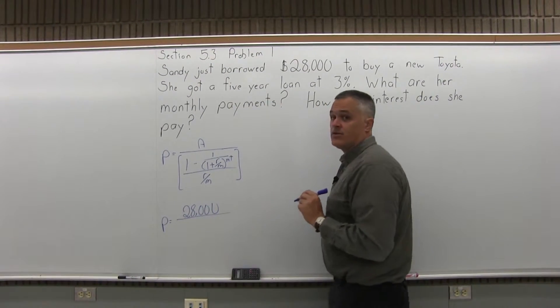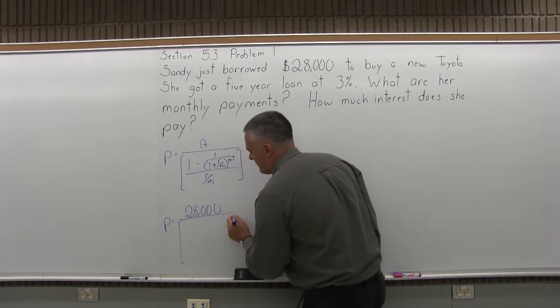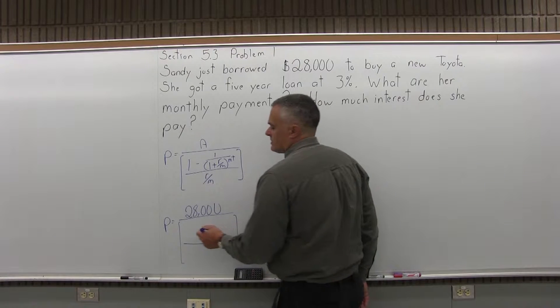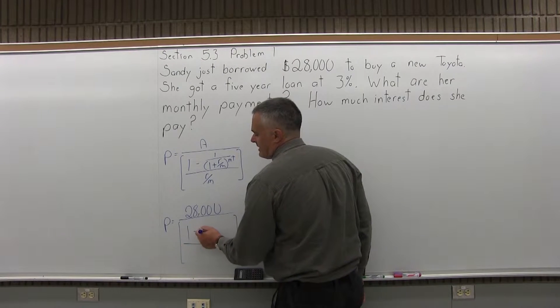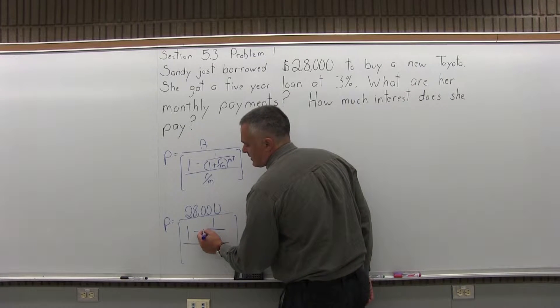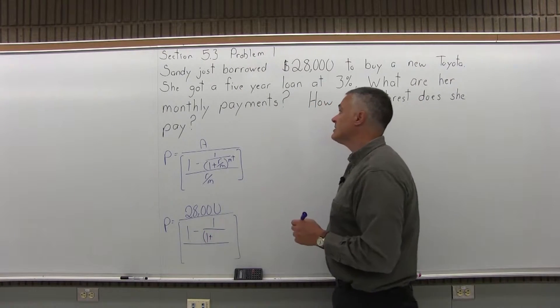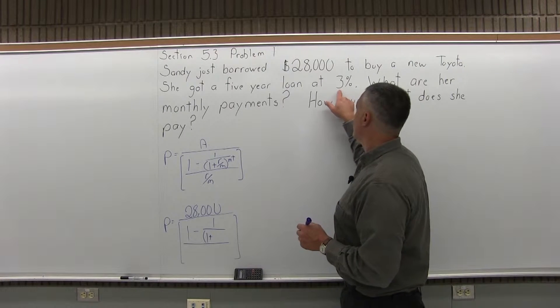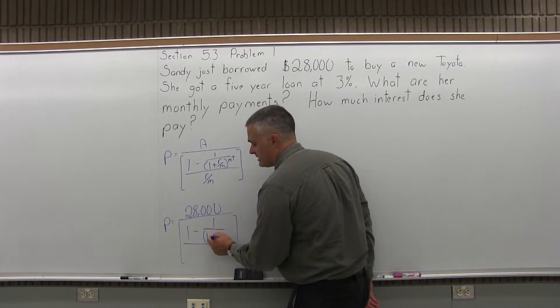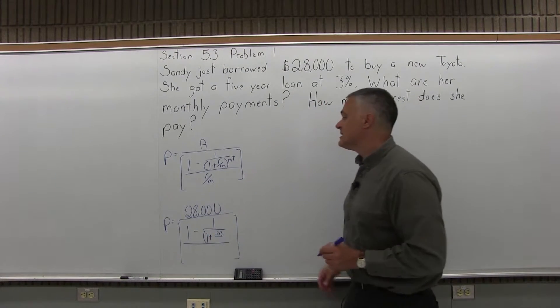And under the $28,000 you have the set of brackets which these finance formulas tend to have. And in the numerator of the brackets we have 1 minus a fraction. The top of the fraction has a 1. The denominator of that fraction has in parentheses 1 plus R over M. Now the R is the rate as a decimal. Now this is a 3% loan. So as a decimal 3% is .03 over M. And M is typically the number of times compounded per year.